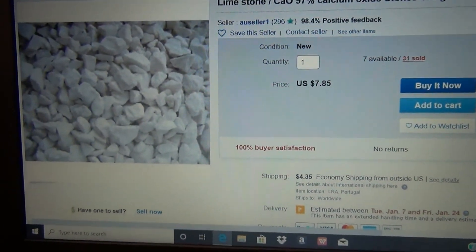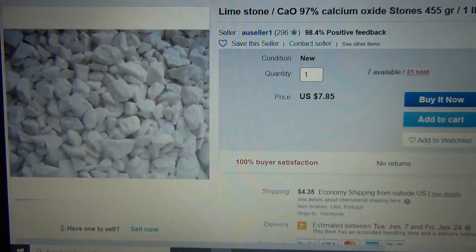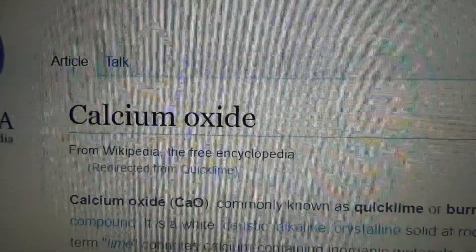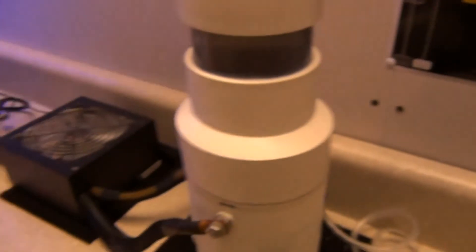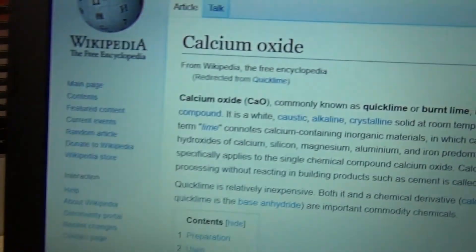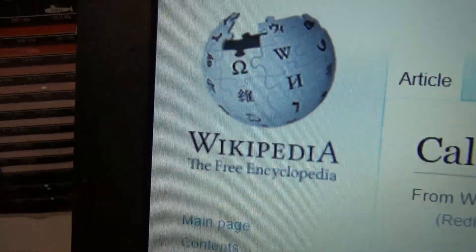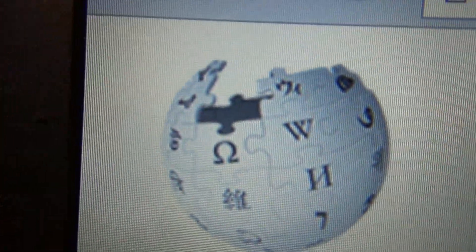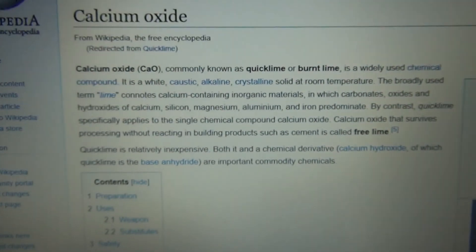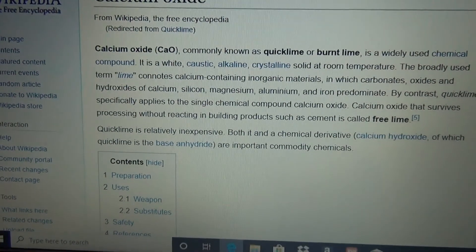So they're very inexpensive. If you want to learn a little bit about them, go to Wikipedia. You can learn about calcium oxide. But be careful, remember who owns Wikipedia. So the information you get off there, you gotta take it as a grain of salt.